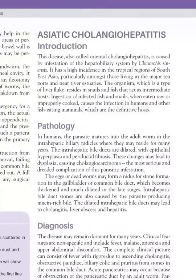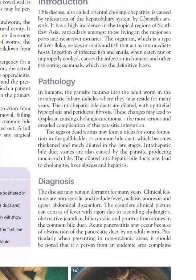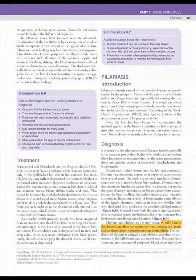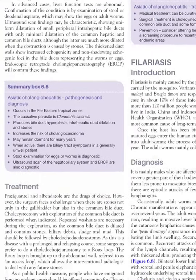Next is Asiatic cholangiohepatitis, caused by Clonorchis sinensis, a type of liver fluke mostly found in fish. It invades the intrahepatic bile ducts, causing dilation and sometimes forming stones in the gallbladder or bile duct. Diagnosis is mainly by ultrasound. An important risk is cholangiocarcinoma, so even subclinical patients must be treated. Definitive diagnosis requires stool examination for worm eggs.